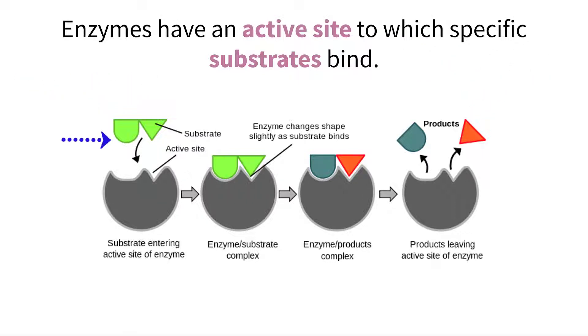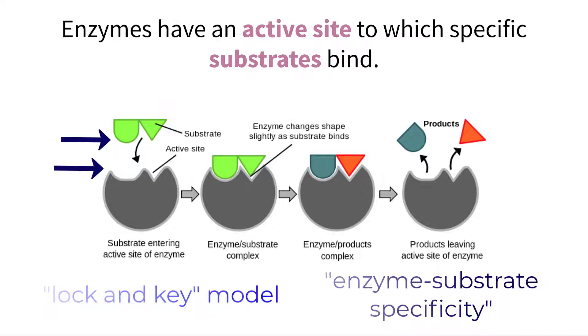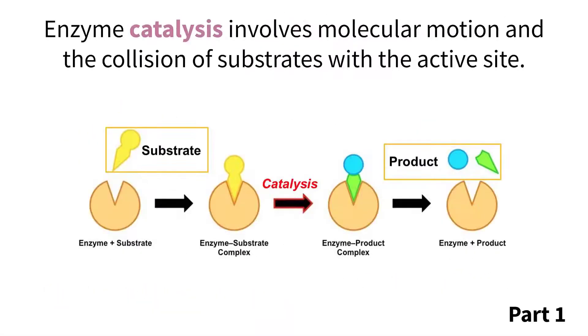Modeling the specific complementary shapes of a substrate to an active site is often referred to as a lock and key model, as a key like the substrate is only designed to fit into one type of lock, the enzyme's active site. You will also hear your teacher refer to this concept as enzyme-substrate specificity.